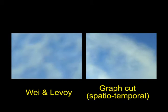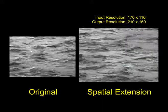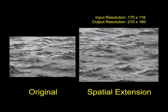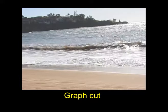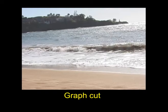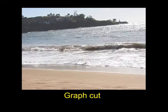Our technique also allows us to extend the video spatially. Here the reverse sequence is spatially extended as well as looped. Here is a video loop that did not work — we only show the transition. The algorithm was not able to find a seam that unnoticeably removes the wave.